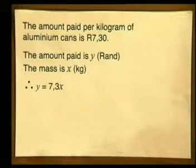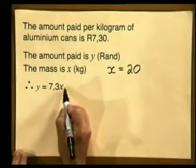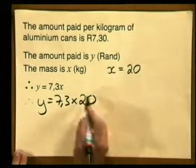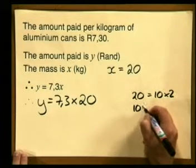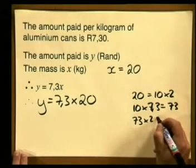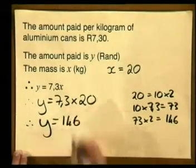It doesn't matter if you use different letters or symbols for your variables — just go through the steps with me to make sure that you got the same result. To calculate the amount paid for 20 kilograms, in other words when x is equal to 20, I simply substitute x in my formula with 20. So y will be equal to 7,3 multiplied by 20. An easy way to do this is to think of 20 as 10 times 2: 10 times 7,3 is 73, and 73 times 2 is 146. So y is equal to 146.